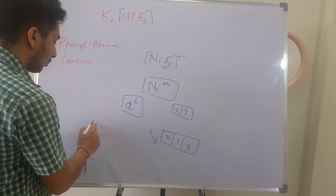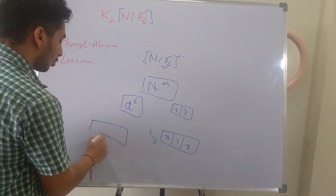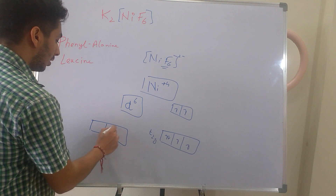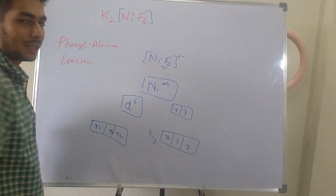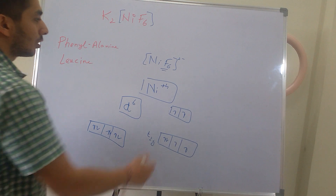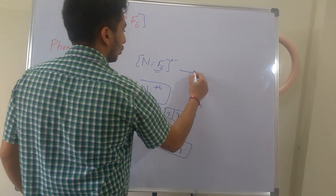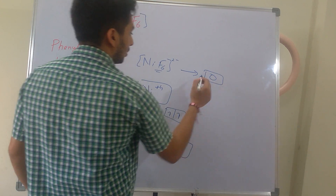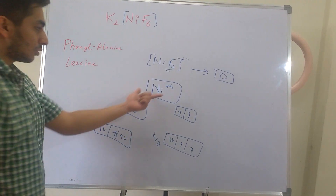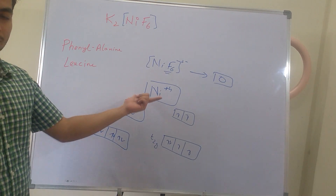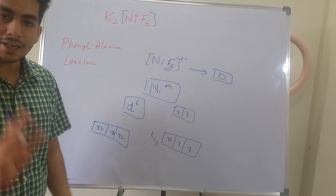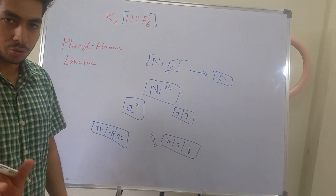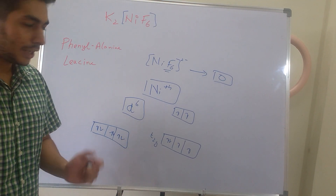In d⁶ with electrons paired, there will be no unpaired electrons. So the answer for this is 0 unpaired electrons. You should remember that in higher oxidation states — higher than +3 — they will always be paired.